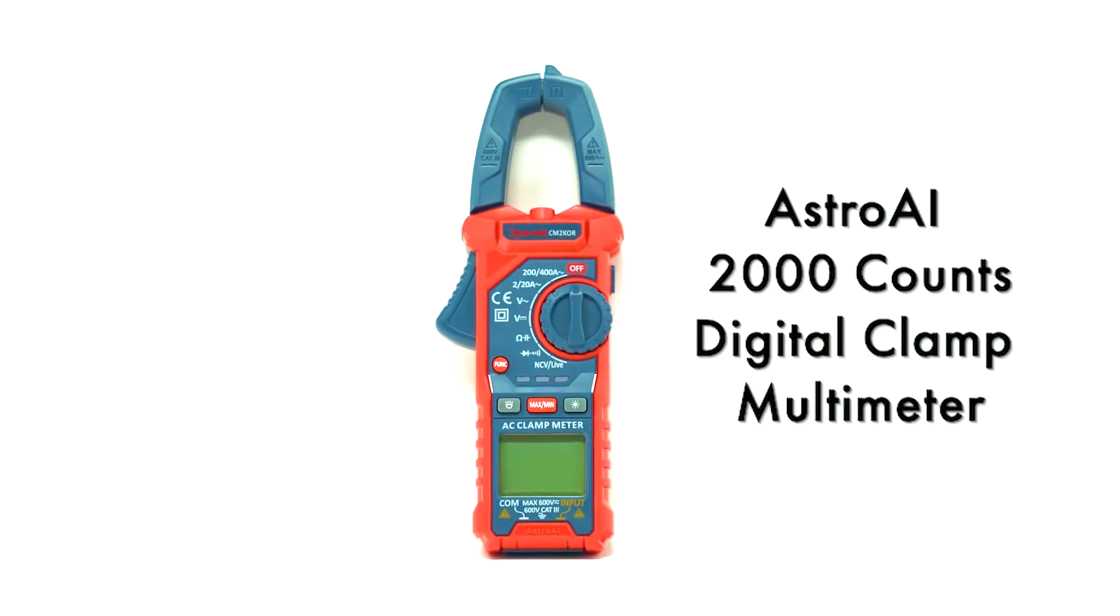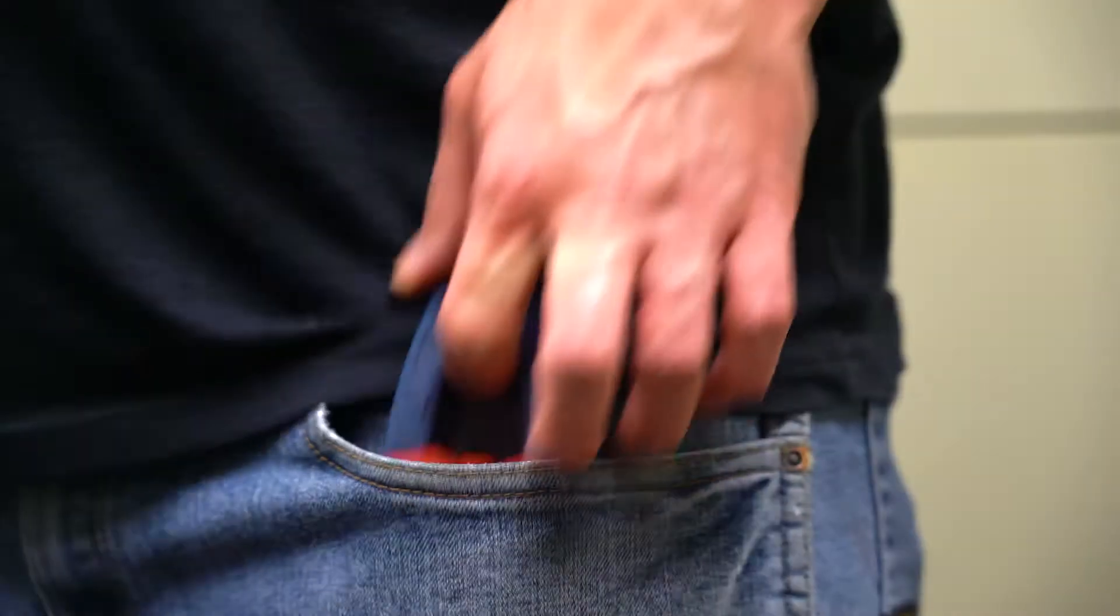The Astro AI 2000 Counts Digital Clamp Multimeter is a pocket-sized, easy-to-use tool for your everyday needs.